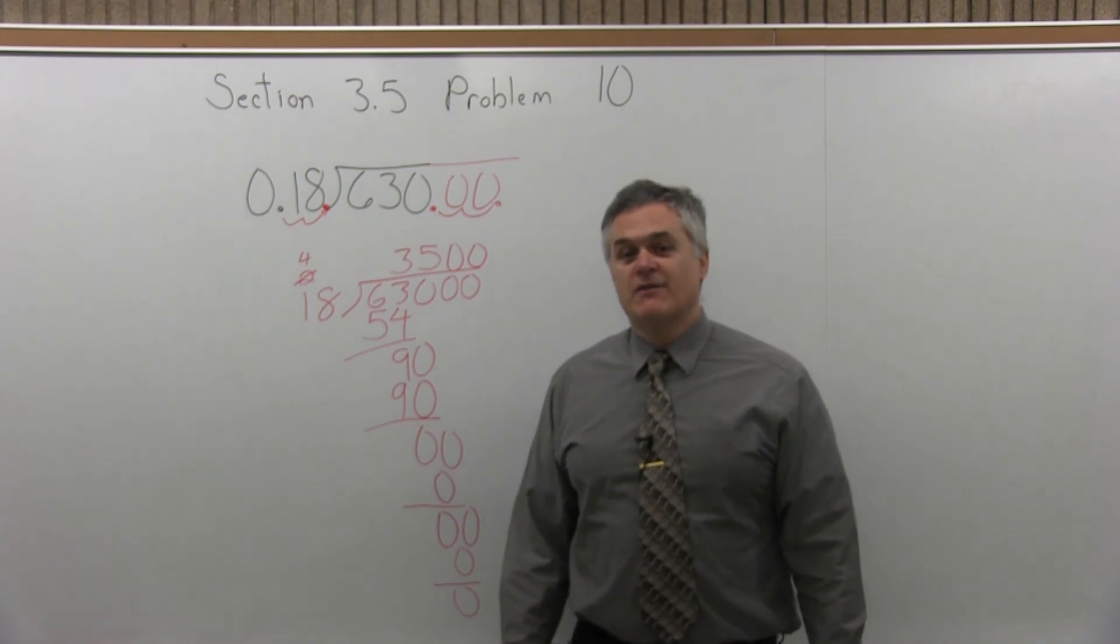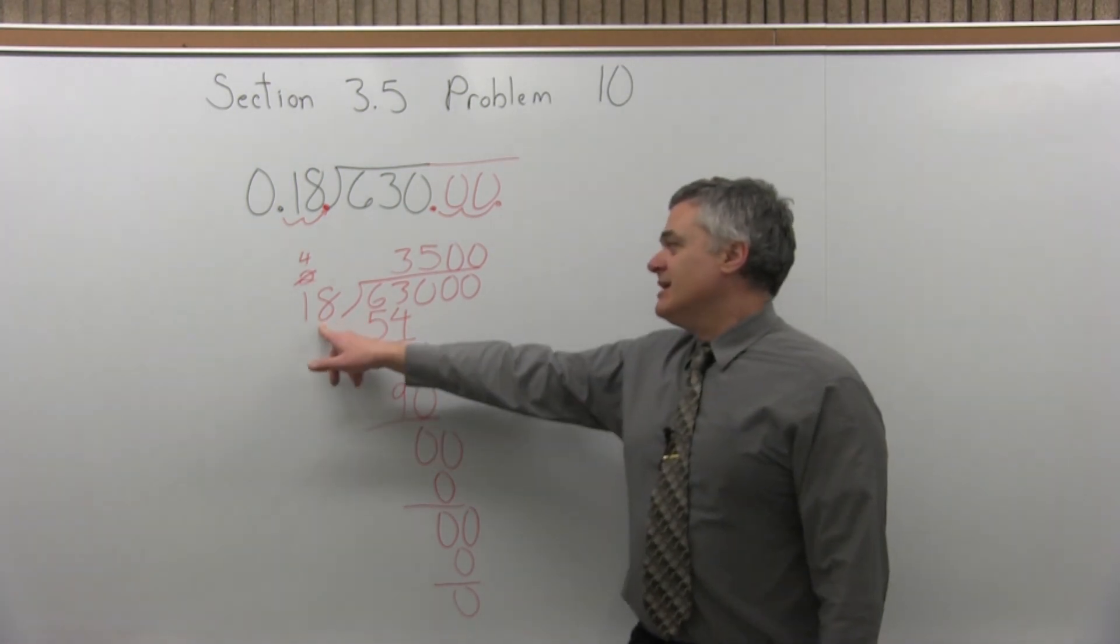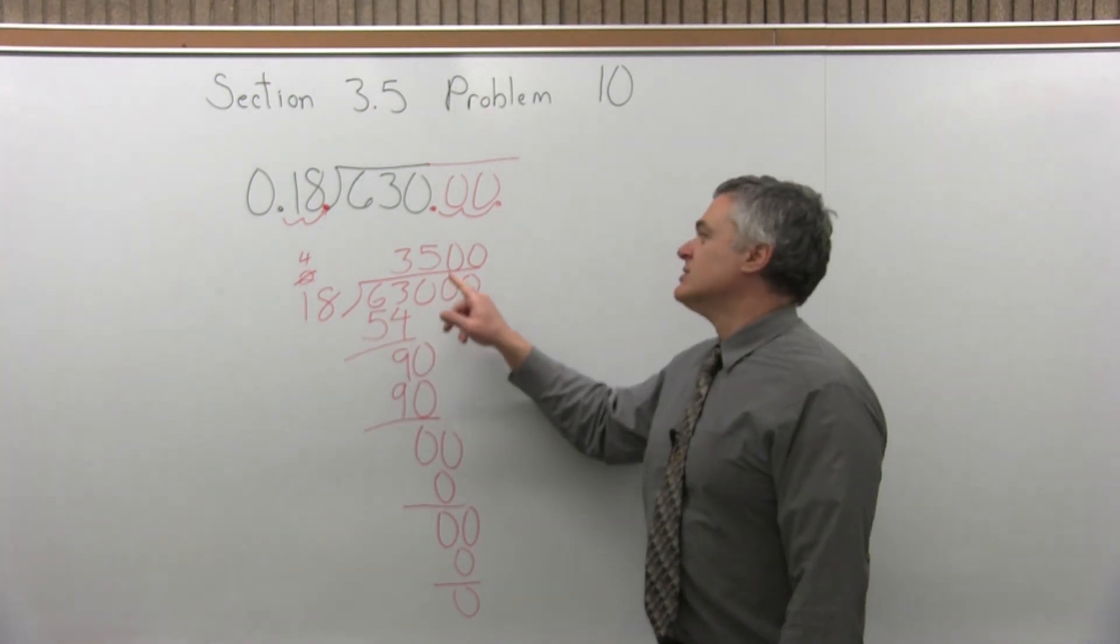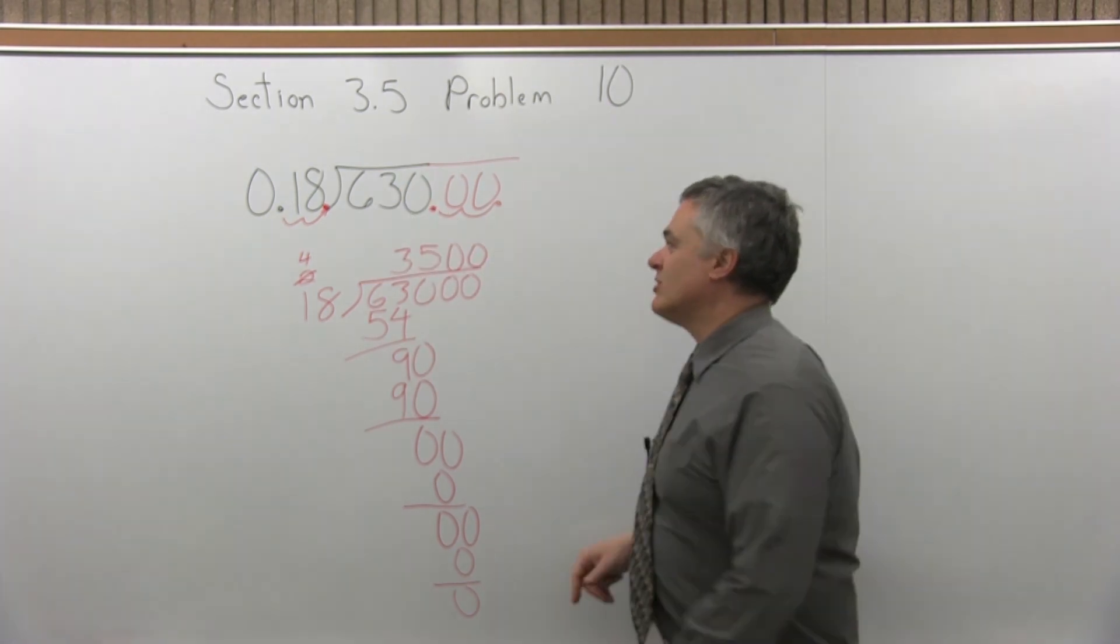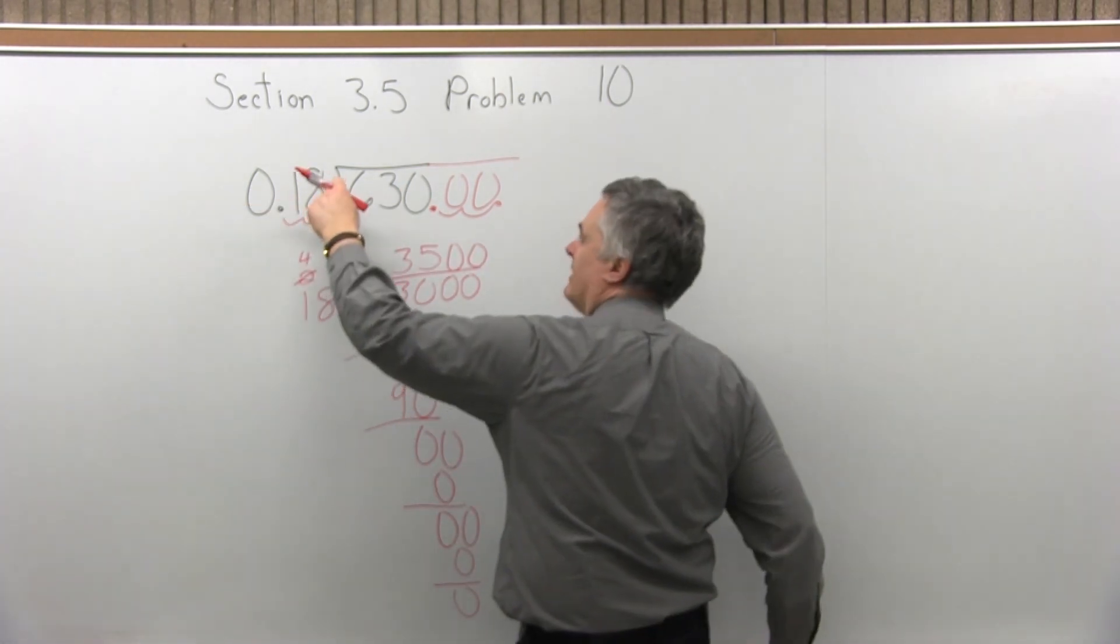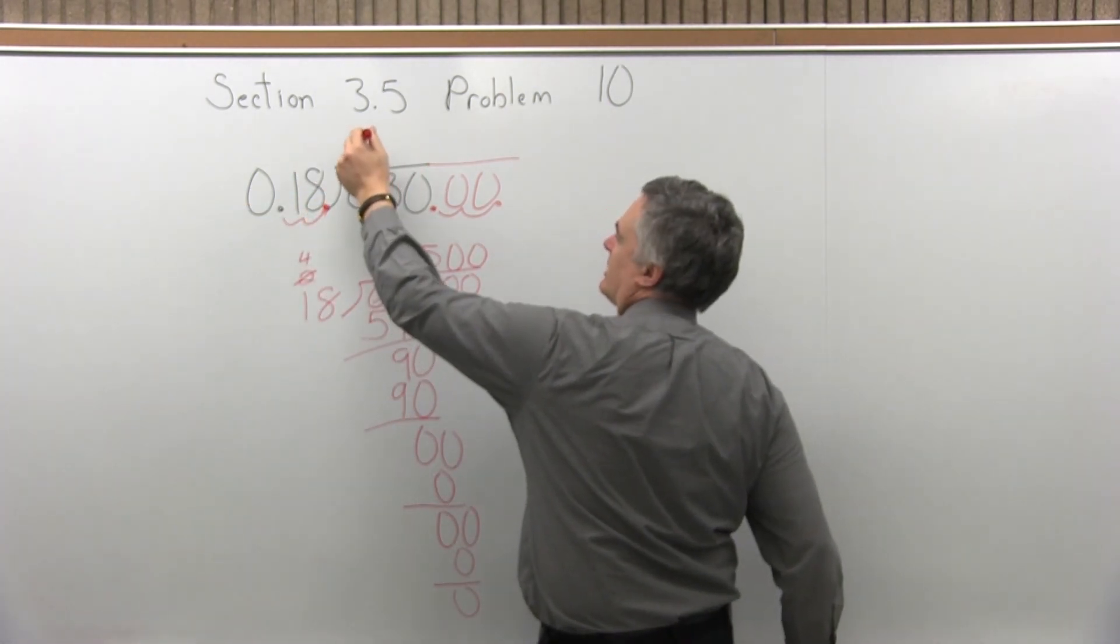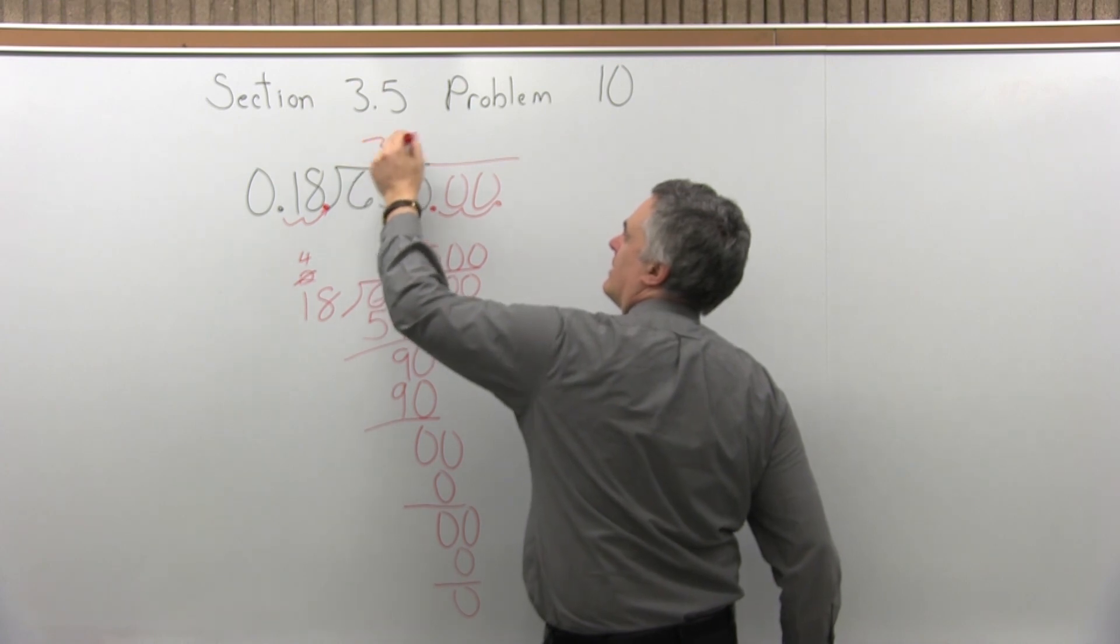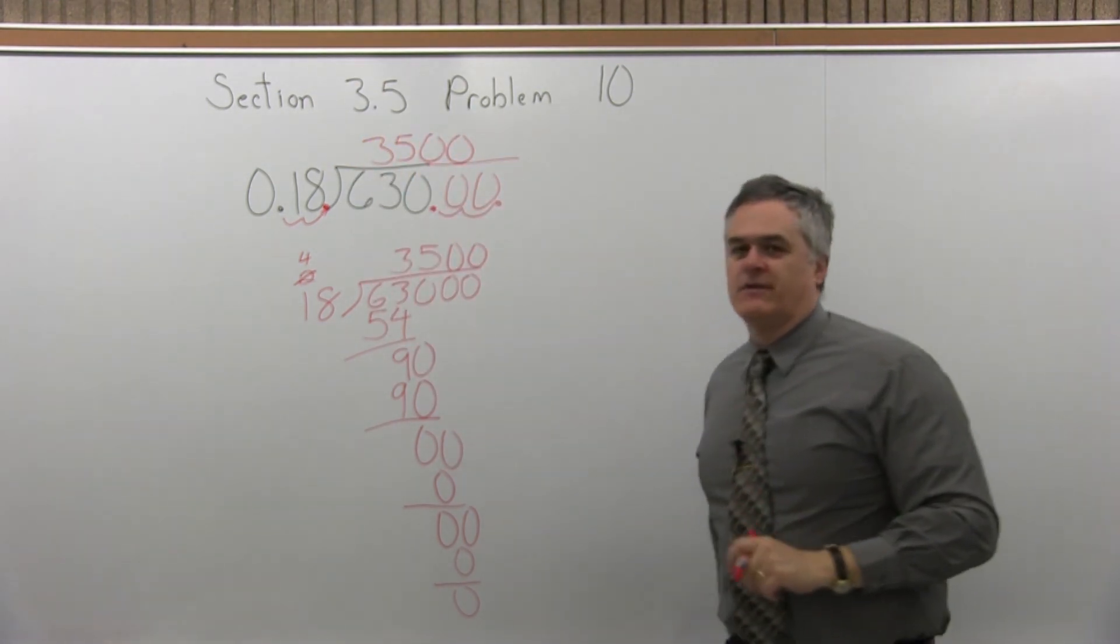So the answer is 3,500. That's how many times 18 divides into 63,000. So therefore, it also divides in 3,500 times, 0.18 dividing into 630. 3,500.